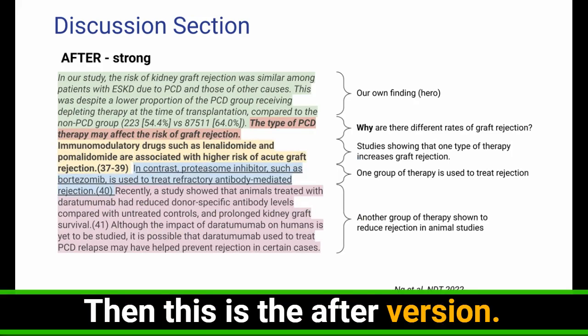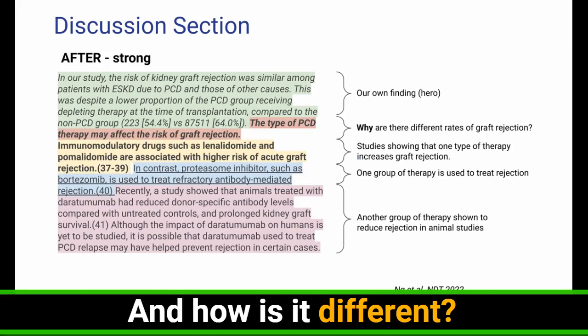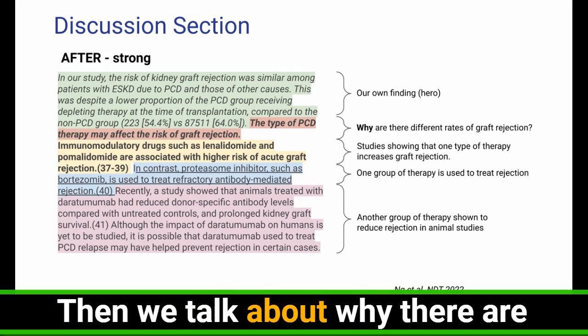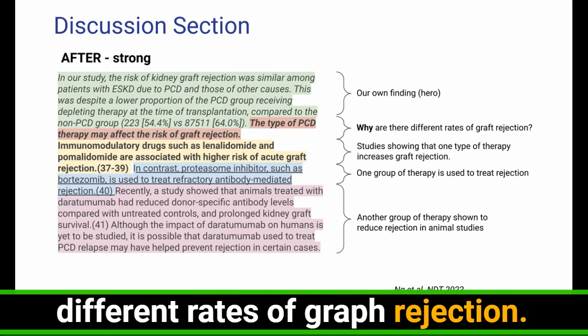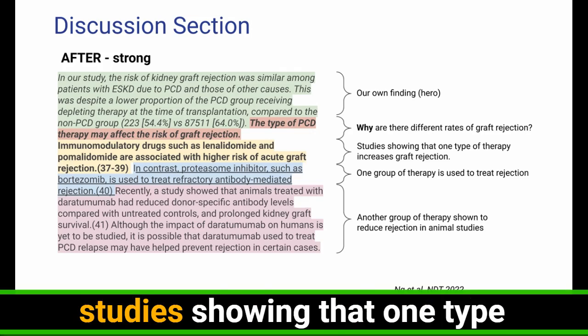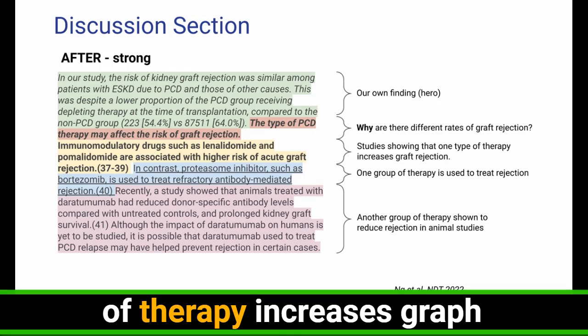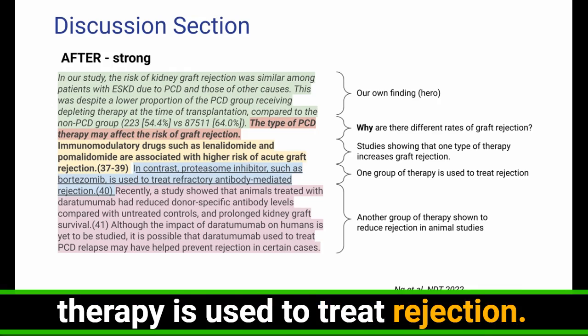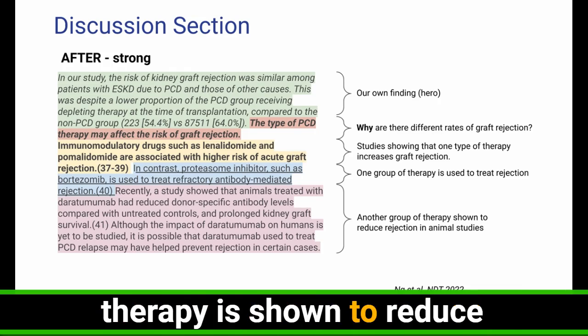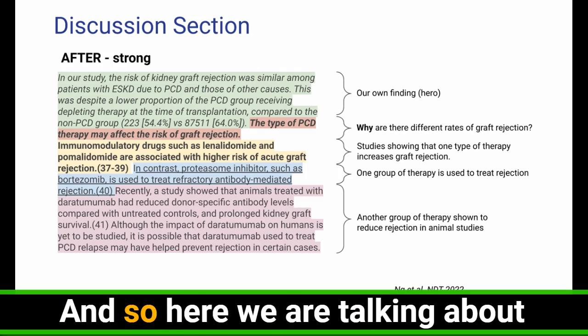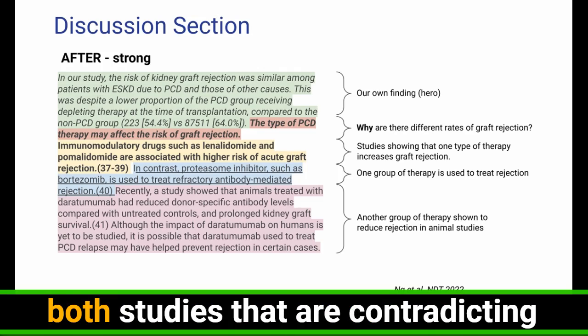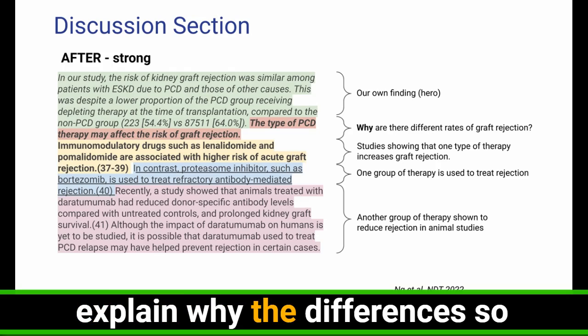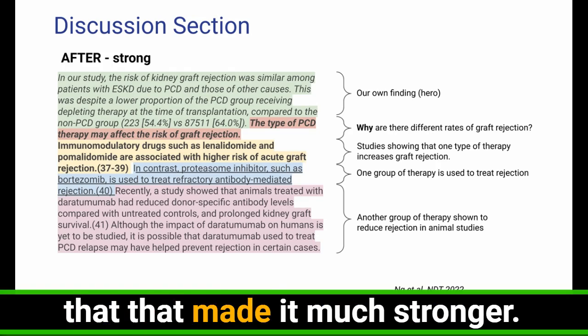Then this is the after version. And how is it different? First, we talk about our own finding, this is the hero. Then we talk about why there are different rates of graft rejection. And here, then we support, okay, studies showing that one type of therapy increases graft rejection. And then one group of therapy is used to treat rejection. And then another group of therapy shown to reduce rejection in animal studies. And so here, we are talking about both studies that are contradicting and also supporting, but we explain why the differences. So that made it much stronger.